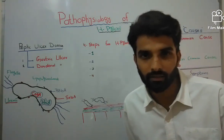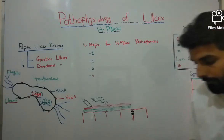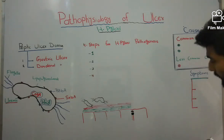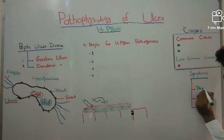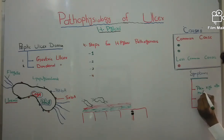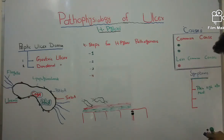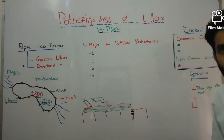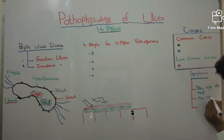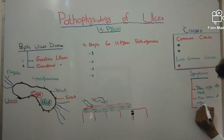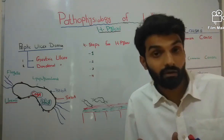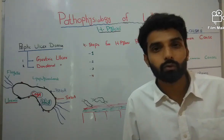The most common symptom of both gastric and duodenal ulcer is pain, but there is a difference: gastric ulcer pain mostly arises right after a meal, while duodenal ulcer pain mostly occurs at night. Other common symptoms include nausea and vomiting, weight loss, dyspepsia, and heartburn.